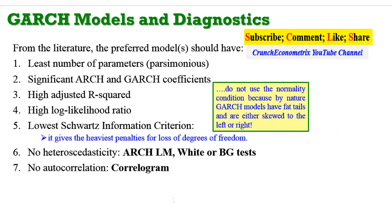The preferred model should have the following features: it must contain the least number of parameters — that is, the model must be parsimonious. The ARCH and GARCH coefficients in that model must be statistically significant. Adjusted R-squared must be high. The log-likelihood ratio must be high. The SIC must be the lowest, because the SIC gives the heaviest penalties for loss of degrees of freedom. Such a model must pass both the heteroscedasticity and autocorrelation residuals tests. However, a trade-off may have to occur, and I will show you that process in the course of this video.